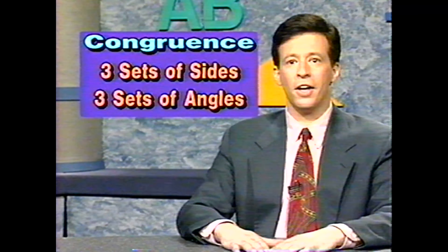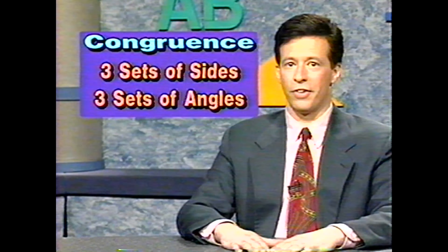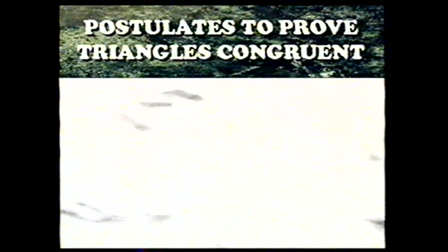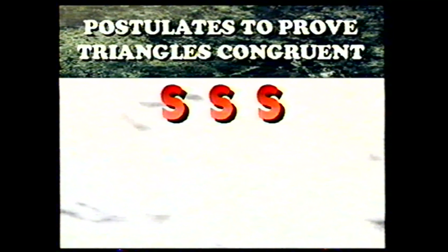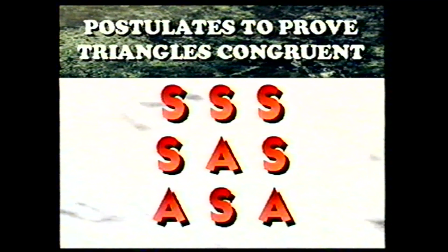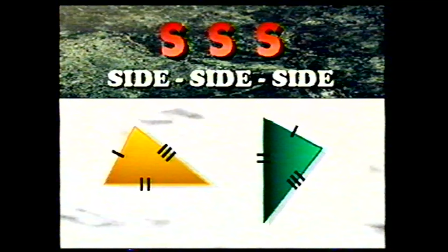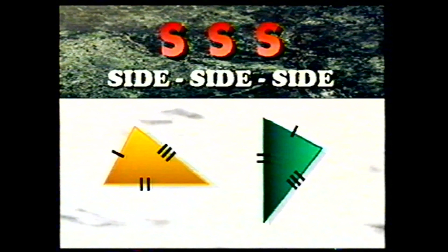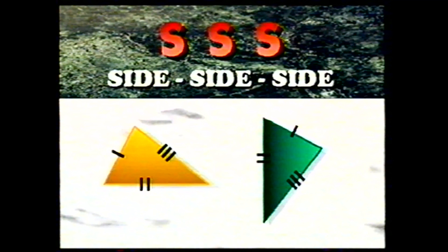The definition of congruence requires that six different things be congruent — three sets of sides and three sets of angles. But there are three postulates that make it easier to verify congruence, commonly referred to by their initials: SSS, SAS, and ASA. First, SSS stands for side-side-side: if the three sides of one triangle are congruent to the corresponding sides of a second triangle, then the triangles are congruent. If we know that the sides are congruent, we do not need to show that the angles are congruent — this will be true automatically.